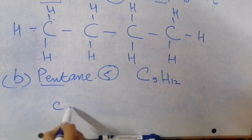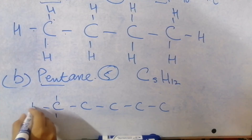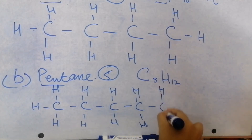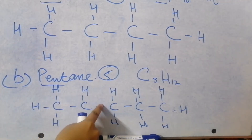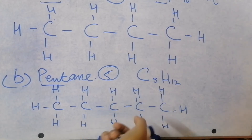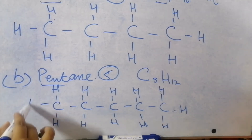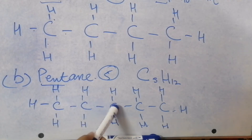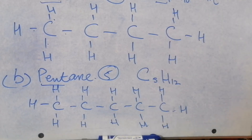Now I am making pentane. It means you have 5 carbon atoms: 1, 2, 3, 4, 5. Now we link them with hydrogen atoms. Each carbon must have 4 bonds. Count the hydrogens for each carbon — each should have 4. Checking all 5 carbons: 1, 2, 3, 4, 5, 6, 7, 8, 9, 10, 11, 12 — that is 12 hydrogen atoms. The molecular formula C5H12 is confirmed. This is the structural formula of pentane.